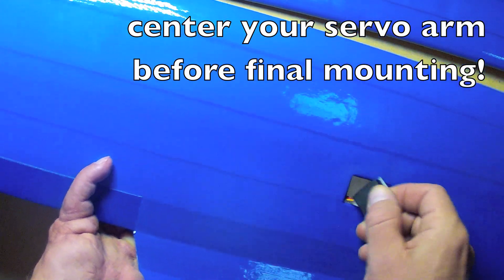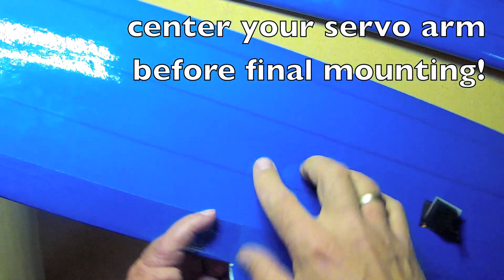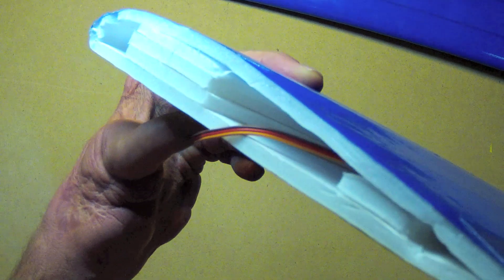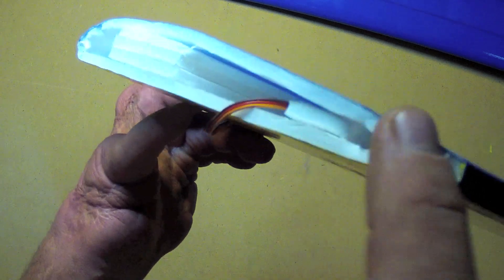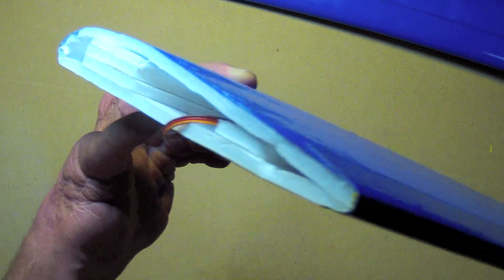So just drop your servo lead and the extension in the hole and with a little encouragement it will drop right through to the rear channel. Now be sure that it does come out the rear channel proper not through your spar channel too so that that remains clear for the actual spar itself.